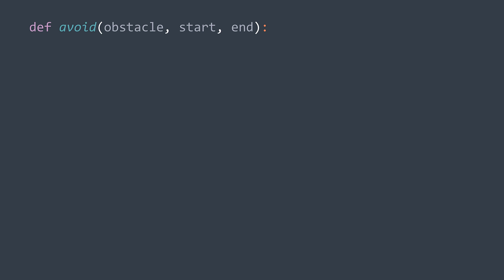In code, we first create the set of points which is made of the obstacle plus start and end, then we compute the convex hull with the function we made in the previous video.